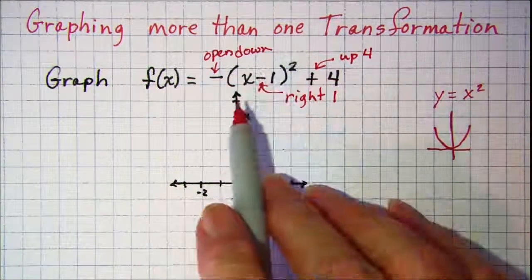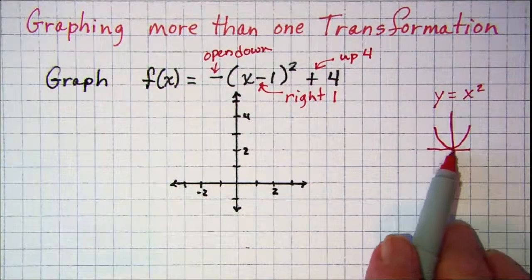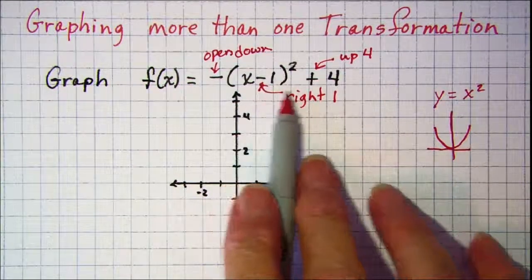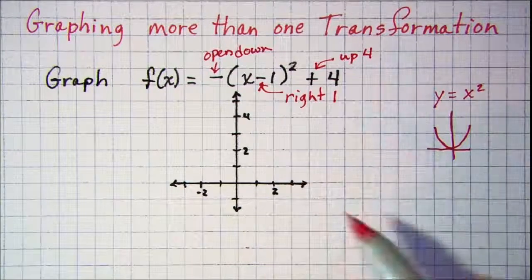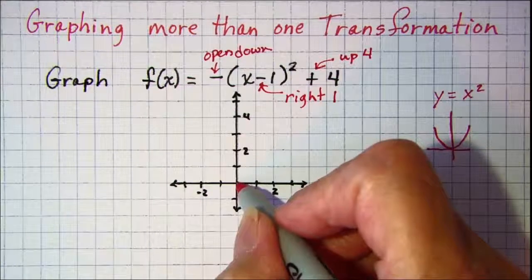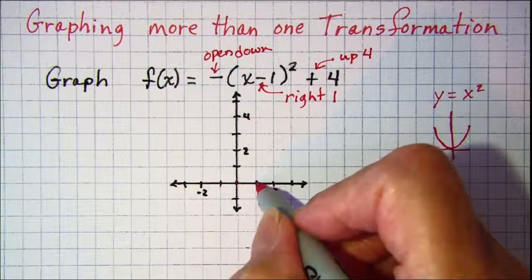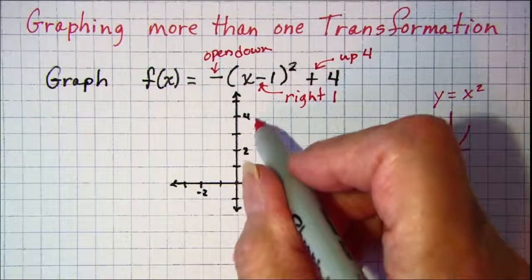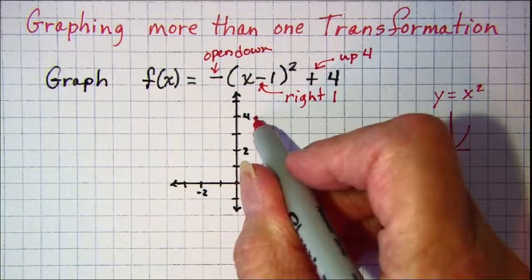So basically we want to take our vertex of our basic graph and move it right 1 and up 4. Our vertex normally would go here. We're going to move it right 1 and up 4, and then we're going to open down.